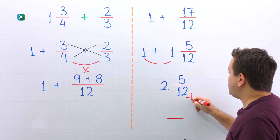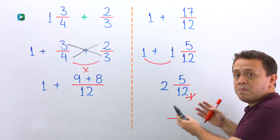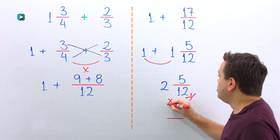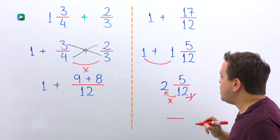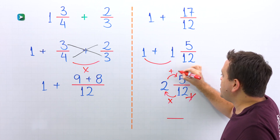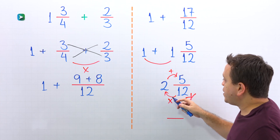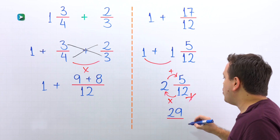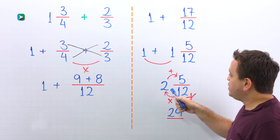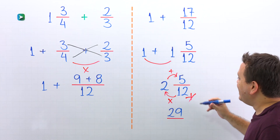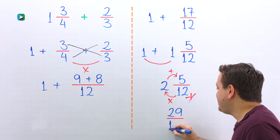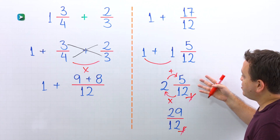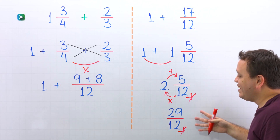However, we can also convert this mixed number to an improper fraction. Do you remember the steps? First, we multiply the denominator by the whole number, and then we add this result to the numerator. Here we go — 12 times 2 is 24, plus 5 gives us 29. We keep the denominator the same: 12. So now we have the final answer as a mixed number — 2 and 5 twelfths — and as an improper fraction — 29 twelfths.